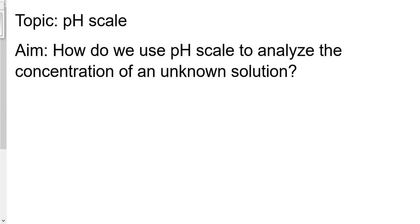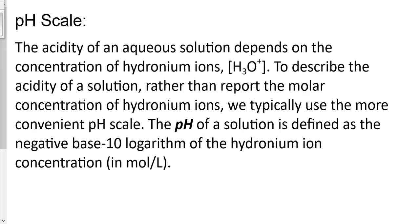Let's talk about the pH scale. How do we use the pH scale to analyze the concentration of an unknown solution? The acidity of an aqueous solution depends on the concentration of hydronium ions, H3O+. To describe the acidity of a solution, rather than report the molar concentration of hydronium ions, we typically use the more convenient pH scale. The pH of a solution is defined as the negative base-10 logarithm of the hydronium ion concentration.